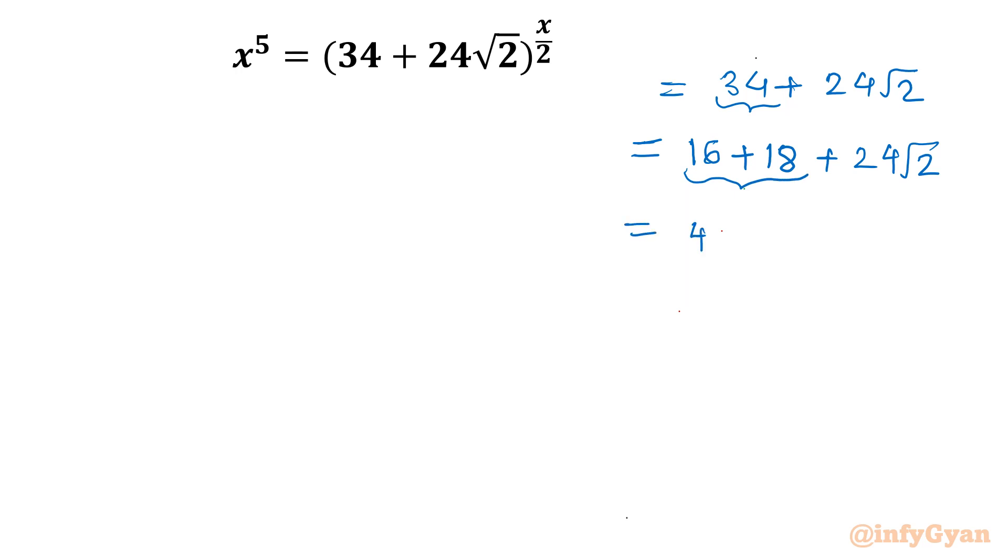Now I can write 16 as 4 whole square. 18 is 3 square root 2, 9 times 2. So 3 square root 2 whole square: 3 square is 9, square root 2 square is 2, 9 times 2 is 18. So if this number 24 square root 2 is going to match with 2ab term then it is the perfect square. So let me check. Plus 2 times A, A is 4, B is 3 root 2. 2 times 4 is 8, 8 times 3 is 24. Yeah it is matching. So we can write: it is 4 plus 3 square root 2 whole square.